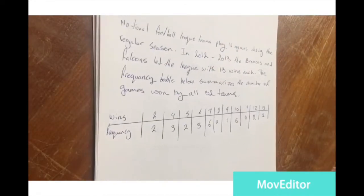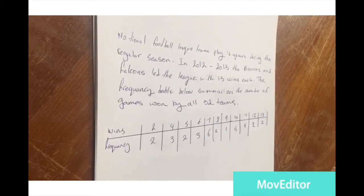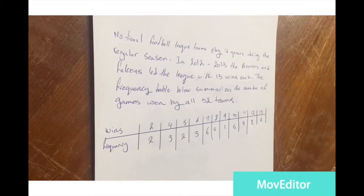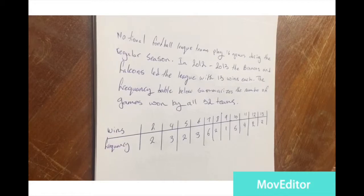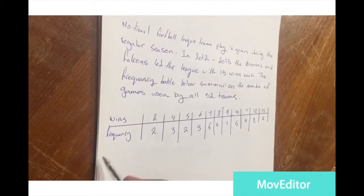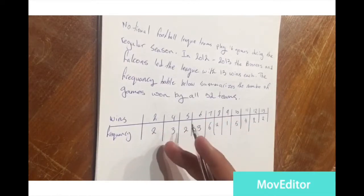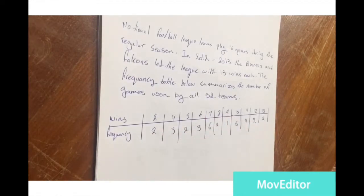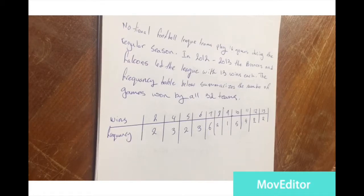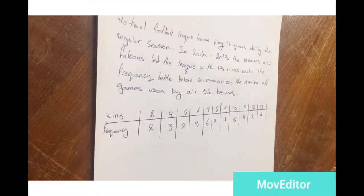Now we have a question: National Football League teams play 16 games during the regular season. In 2012 to 2013, the Broncos and Falcons led the league with 13 wins each. The frequency table below summarizes the number of games won by all 32 teams. We need to find the five number summary: minimum, Q1, Q2, Q3, and maximum.